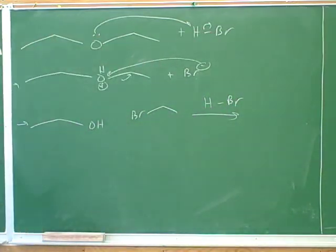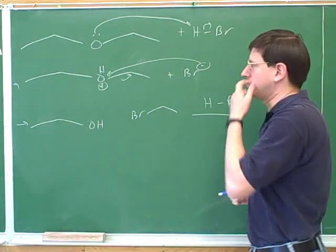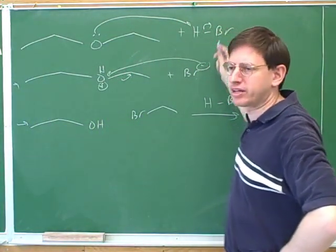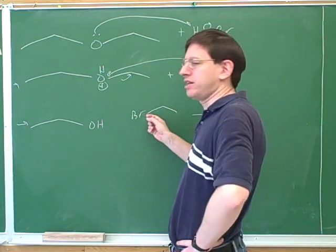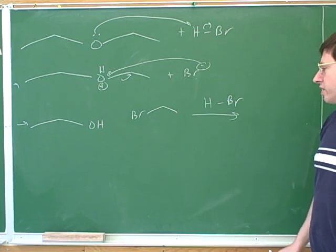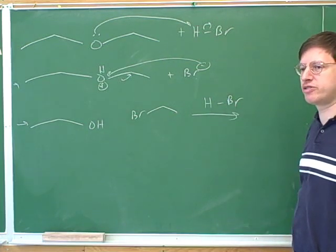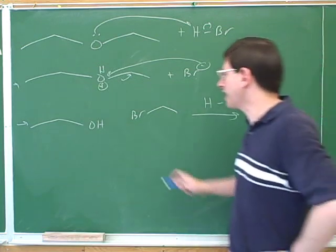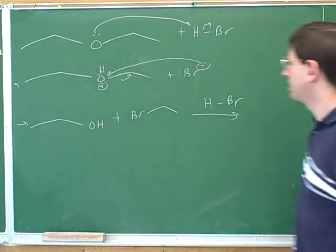We're not done with that reaction we were looking at before. Remember that in the original reaction we took the ether and reacted it with hydrobromic acid, and that gave us an alcohol and a haloalkane. But let's ask if there are any further reactions that we can go through. Suppose that we have excess hydrobromic acid — how would you expect the hydrobromic acid to react with these products?